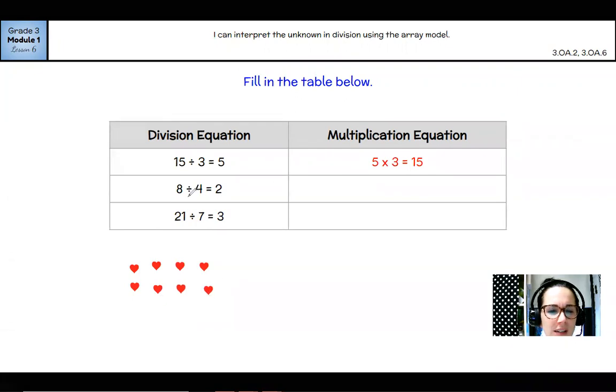All right. So 8 divided by 4 equals 2. So there are 4 in each row and there are 2 in each column. So when we think of multiplication, remember multiplication is rows times columns. So that would mean 2 times 4 equals 8. Remember, you can also flip-flop these. It could say 4 times 2 equals 8.